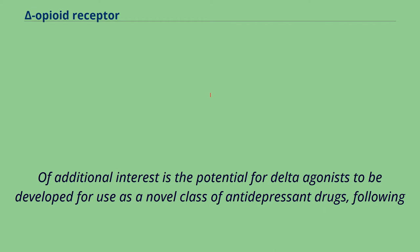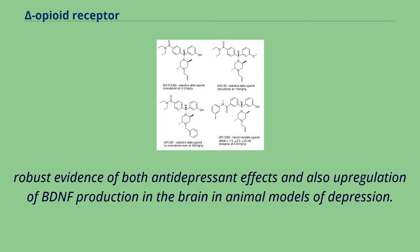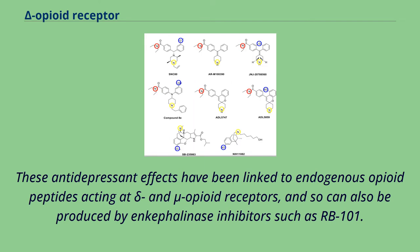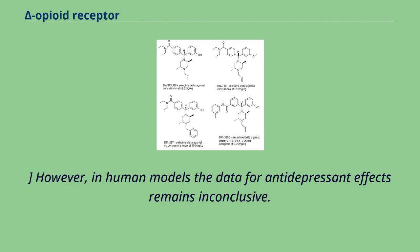Of additional interest is the potential for Delta agonists to be developed for use as a novel class of antidepressant drugs, following robust evidence of both antidepressant effects and also upregulation of BDNF production in the brain in animal models of depression. These antidepressant effects have been linked to endogenous opioid peptides acting at Delta and Mu opioid receptors, and so can also be produced by enkephalinase inhibitors such as RB101. However, in human models the data for antidepressant effects remains inconclusive.